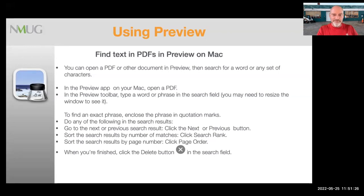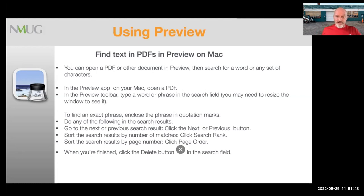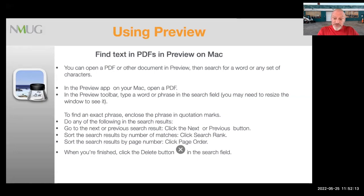Regarding searching in Preview: if you want to look for an exact phrase, you can put it in quotes, just like in Google. For example, type "vegan lasagna" in quotes to search for only that exact phrase. In the search field, you can click Next or Previous to navigate to each result. You can sort search results by number of matches or by the pages they appear on. When finished, click the delete button to clear the search.